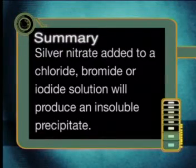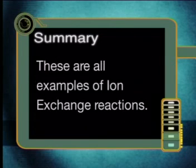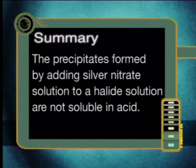Let us now summarize everything that we have learned today. Silver nitrate added to a chloride, bromide, or iodide solution will produce an insoluble precipitate. Silver chloride is a white precipitate, silver bromide is a cream precipitate, and silver iodide is a yellow precipitate. They are all examples of ion exchange reactions. The precipitates formed by adding silver nitrate solution to a halide solution are not soluble in acid.